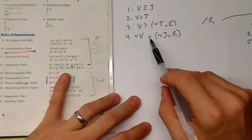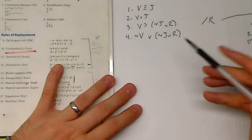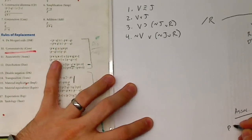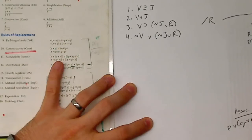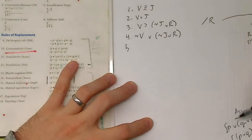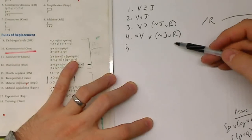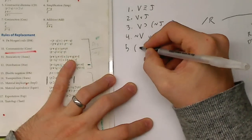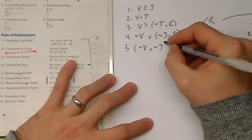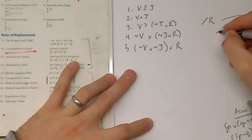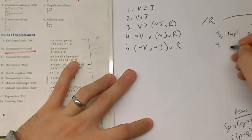Now that I have the disjunctions, notice the rule of associativity. If I have P∨(Q∨R), I can always logically replace that with (P∨Q)∨R. So maybe I should do that right here — that seems like something I could do immediately. If I use associativity, I need to transform it into (¬V∨¬J)∨R. So that's going to look like (¬V∨¬J)∨R — line three implication, line four associativity.